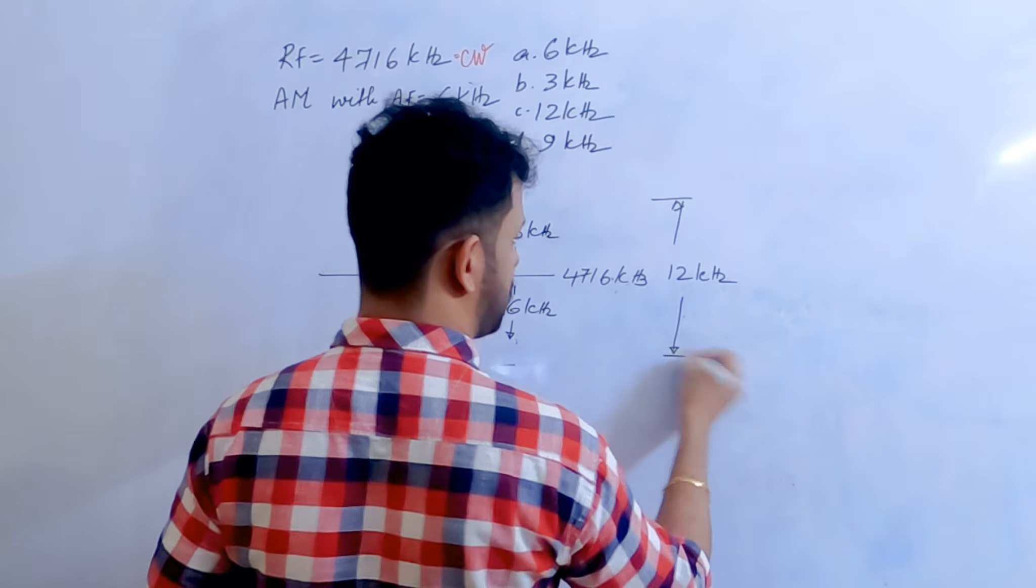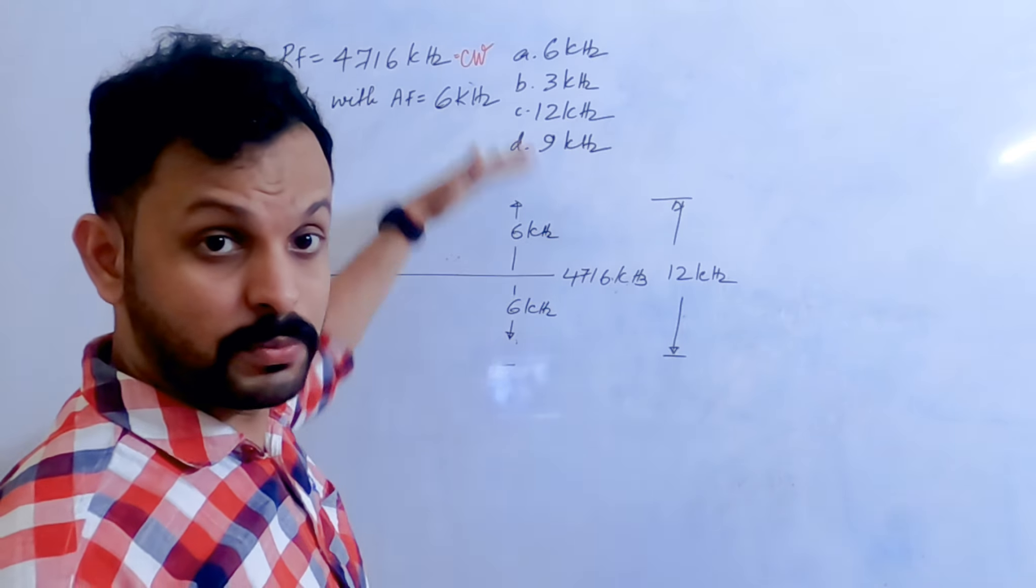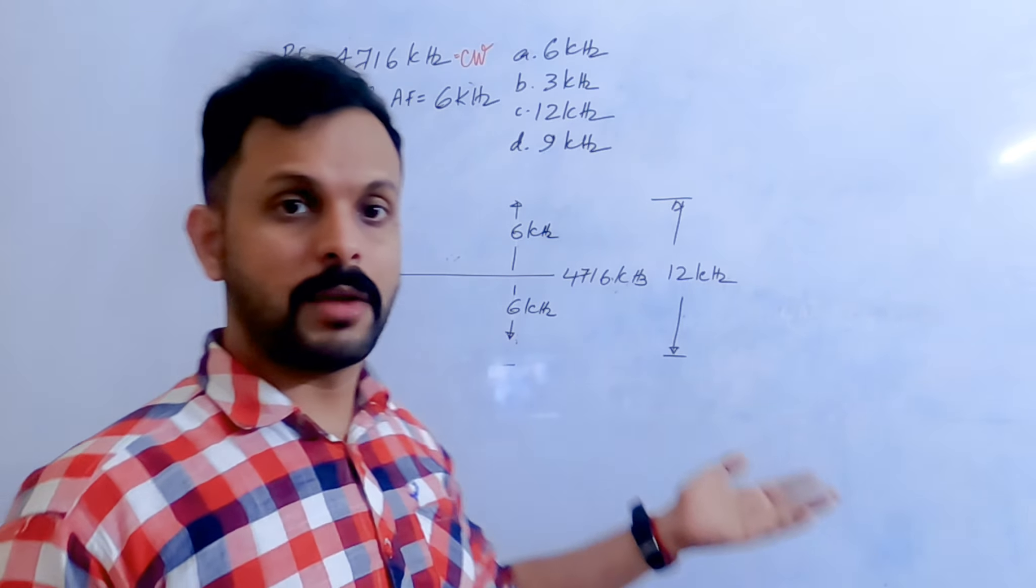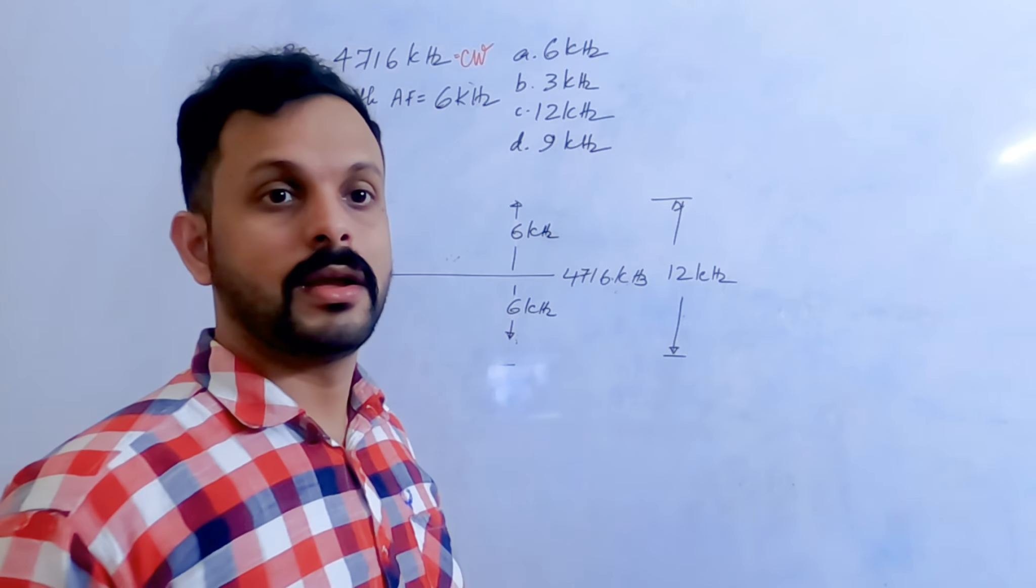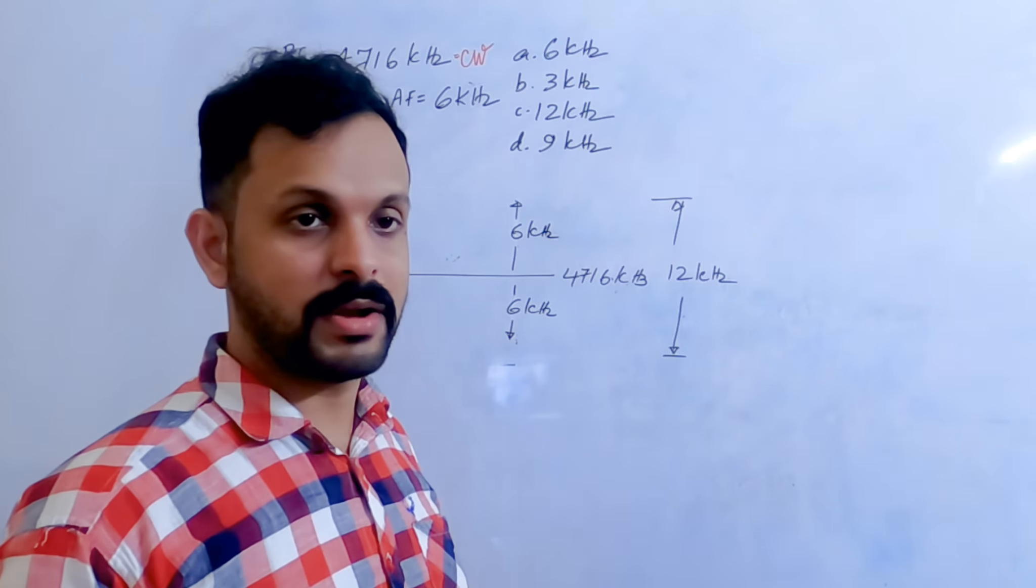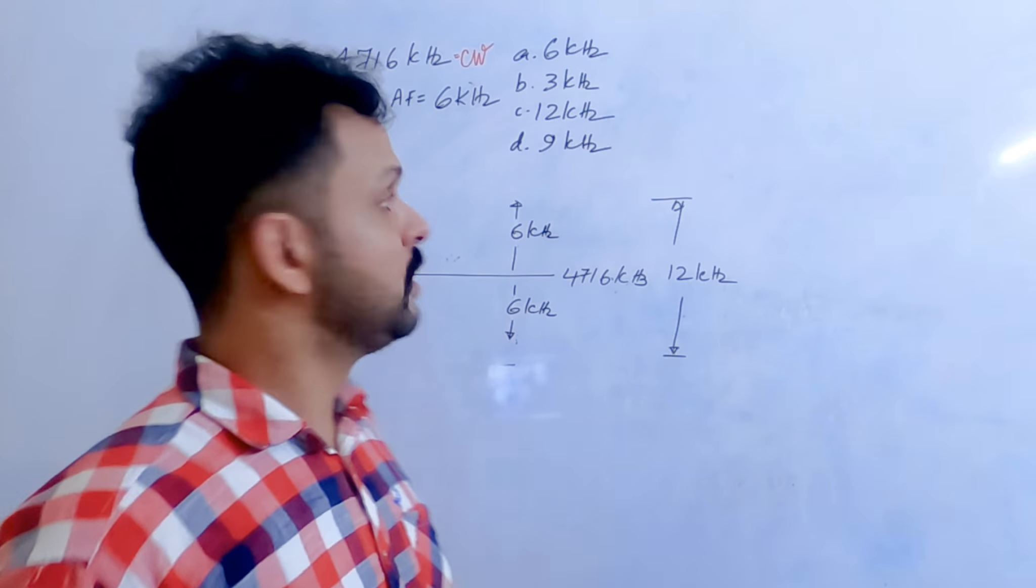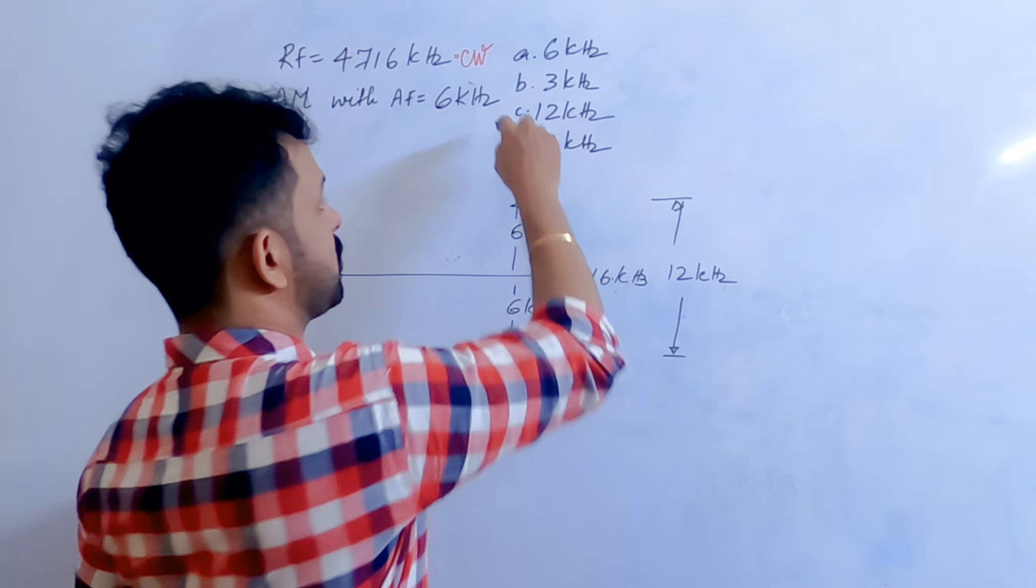...with a different example in the previous class notes where we have 6 kHz on both sides. Depending upon the type of transmission, we might clip off one of the sidebands and take only one side—this is called single sideband transmission (SSB). If you keep both, it becomes double sideband transmission. So it's 12 kHz total bandwidth.